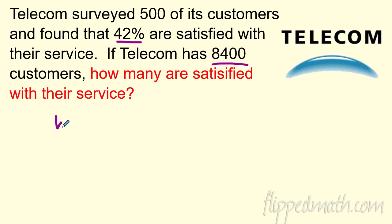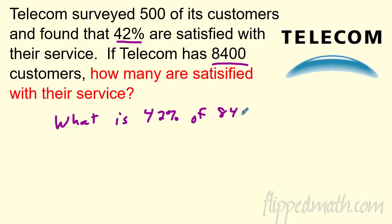So really I'm asking: what is 42% of 8,400 — all their customers? Then I can plug it into the formula. The formula for these is: is over of equals percent over 100. Once you have the formula, straight up plug and chug — just go for it.